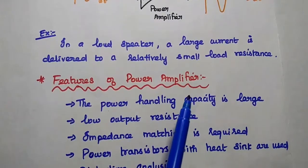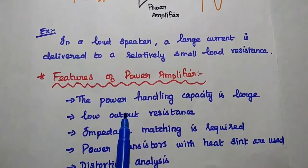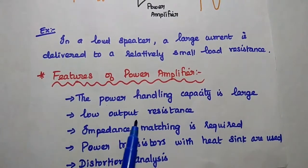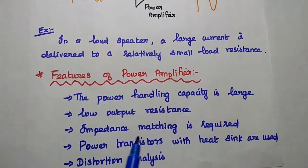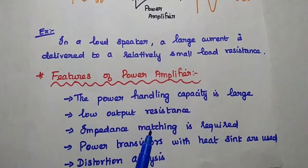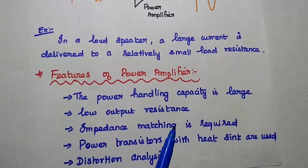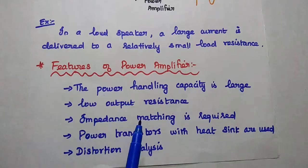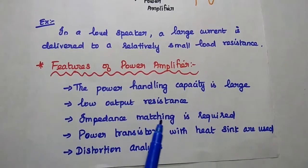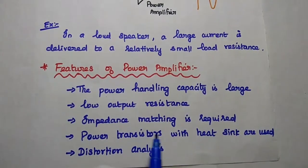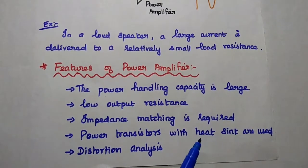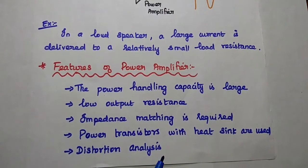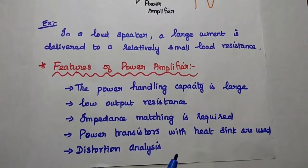Next, the features of power amplifiers. The power amplifier has a very large power handling capacity. It has low output resistance. It requires impedance matching to ensure the maximum output power. Here, impedance matching is a very important concept to deliver high output power. Power transistors with heatsink are used in power amplifiers. Distortion analysis is an important concept in power amplifier design.